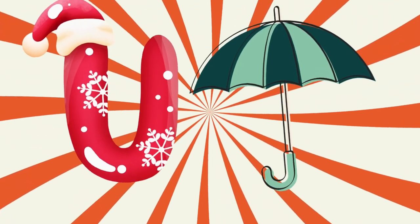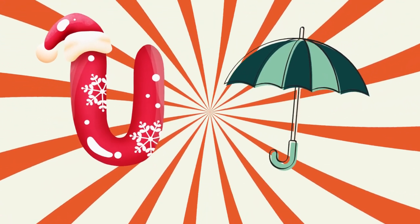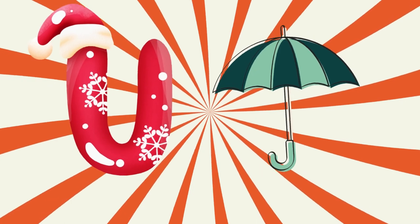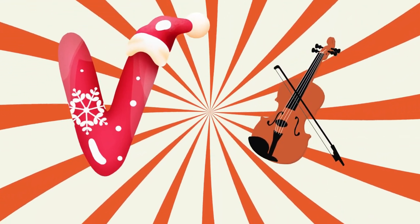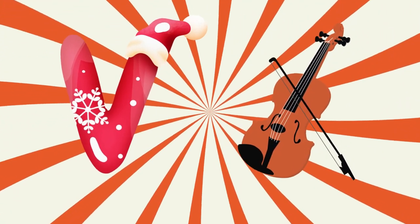U is for umbrella, u-u-u-umbrella. V is for violin, v-v-violin.